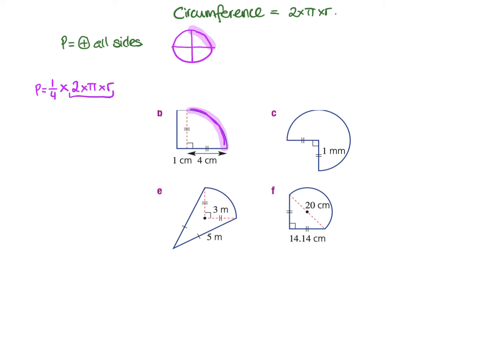This is the formula for the circumference of a circle. That bit along there indicates the radius, because it would be that bit there, which is the radius. So in this question, we can do p equals a quarter times 2 times pi times 4, because that's what the radius is. We also still have to add the other bits of the shape — there's a little flat bit here which is 1, so I'd add 1, add 1. And there's also this straight bit down here, adding another 4, because that's the same length as that other side.